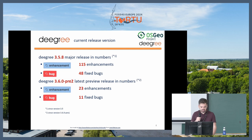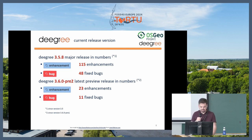Degree 3.5.8 is the latest major release. It contains 115 enhancements and 48 bug fixes — that's quite a lot, though this was developed over a couple of years. Degree 3.6 is currently in the making; it currently contains 23 enhancements and 11 bug fixes, and is a pre-release version we are working on now.